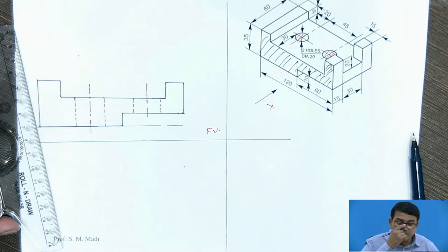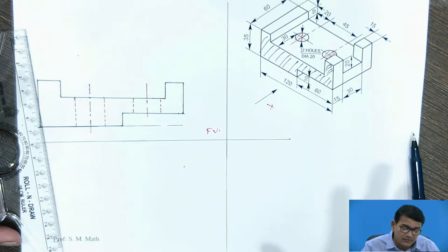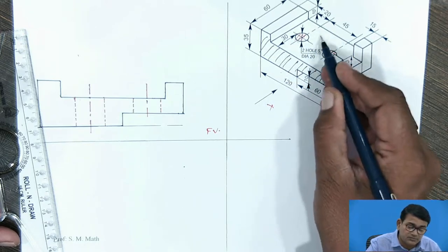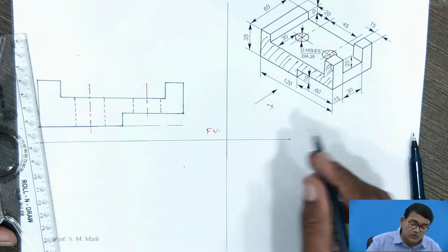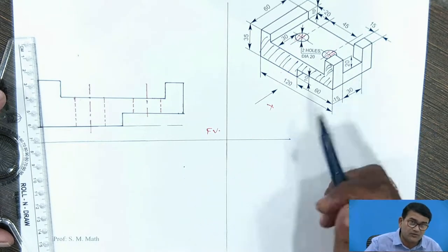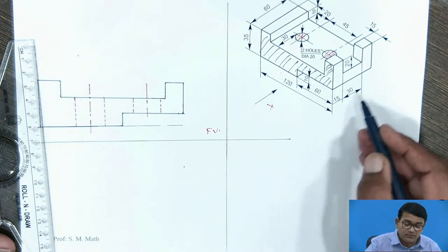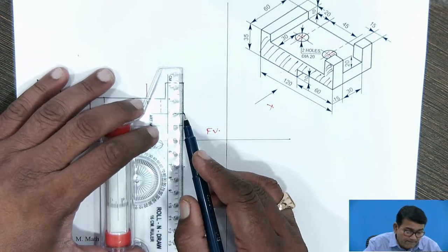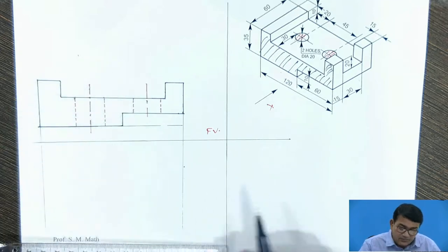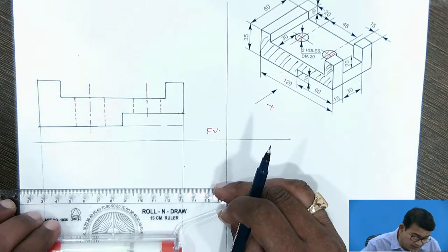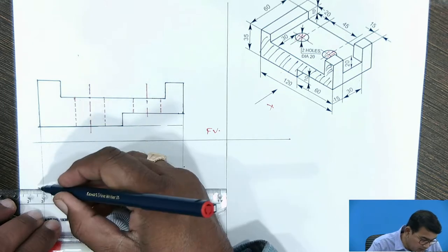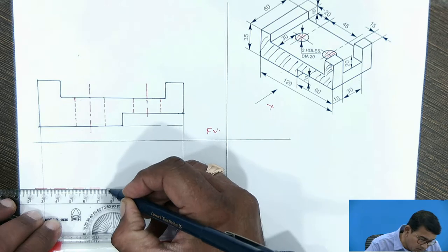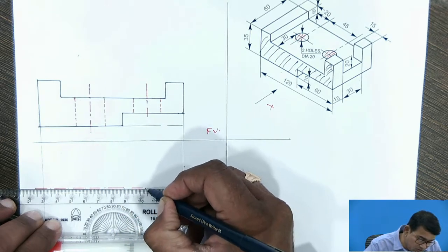So this is the front view complete. Now go for the top view. In the top view, calculate the maximum dimensions. The length is already given as 120 mm and the width is 60 mm. Draw the gradient line, then draw the center line. The center line is very important — from the center line you have to transfer the distances, calculate the measurements, calculate the holes and their edges.